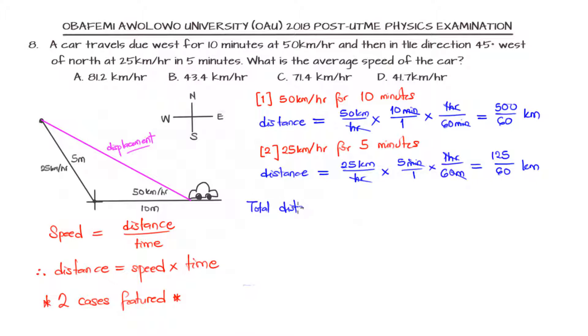Now that means, since we know the distance covered in the first case and the distance covered in the second case, the total distance will be 500 over 60 plus 125 over 60, and that will be 625 over 60 kilometers. That's the total distance that was traveled.